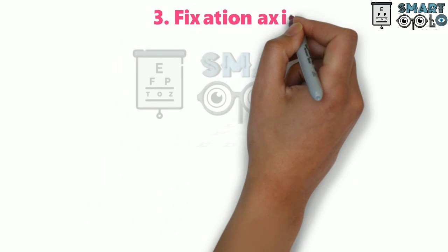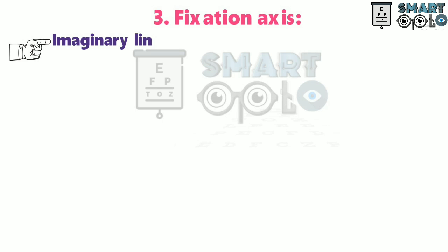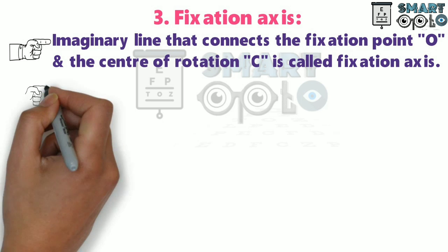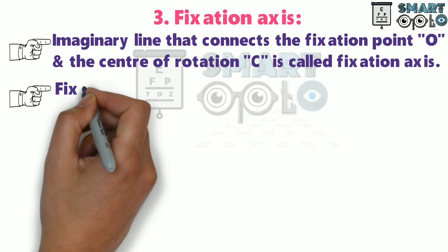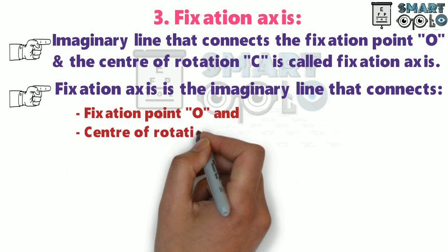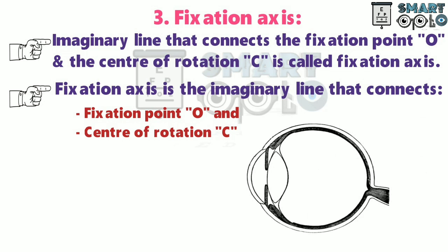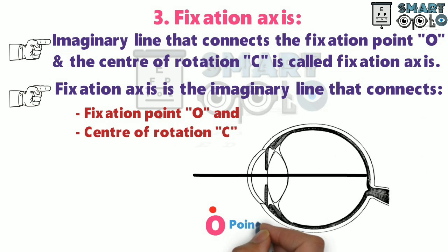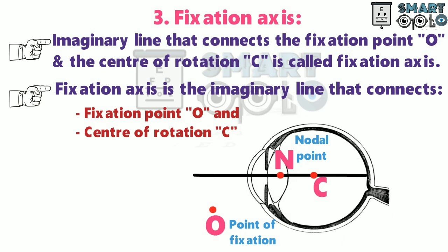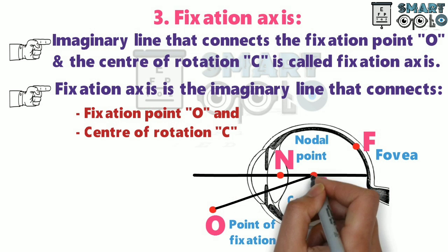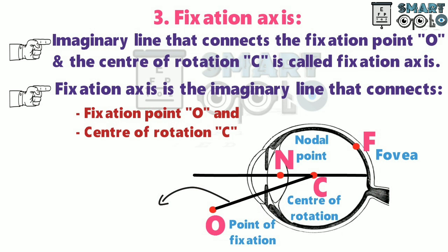The third point is about fixation axis. An imaginary line that connects the fixation point O and the center of rotation C is called the fixation axis. In this diagram, this is the optical axis. This dot represents the point of fixation, this is the nodal point, this point represents the center of rotation, and this dot is the fovea. The line that connects the point of fixation and the center of rotation is known as the fixation axis.